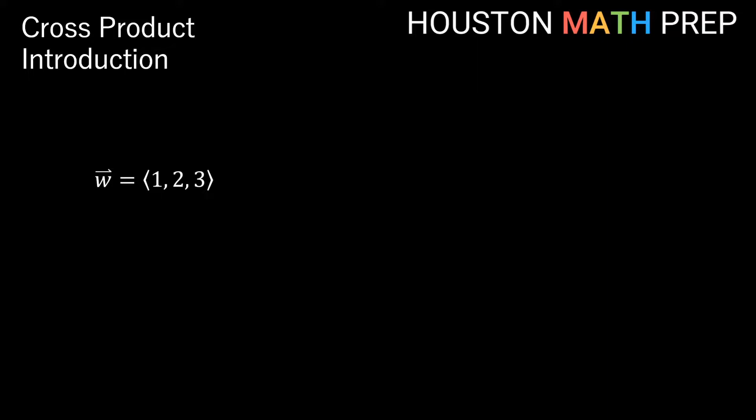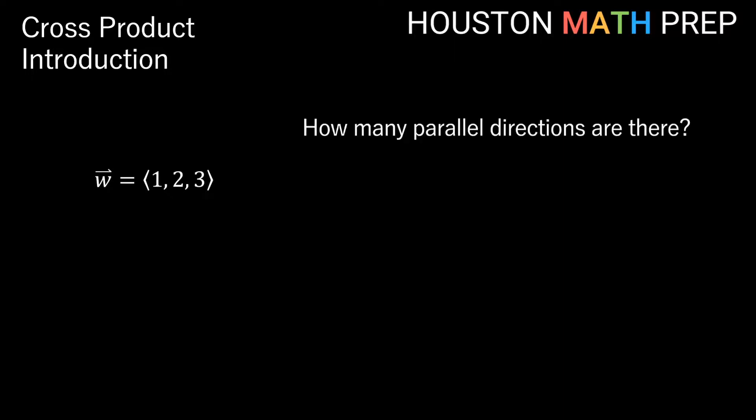Welcome back everyone. Houston Math Prep here. Let's say we have some vector w — I've chosen the vector (1, 2, 3) to be my w as a for instance. And we ask the question: how many parallel directions are there to my vector w?